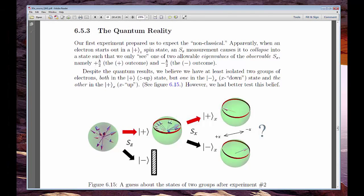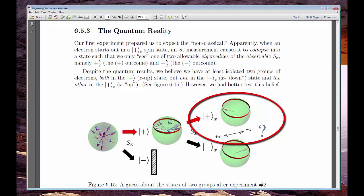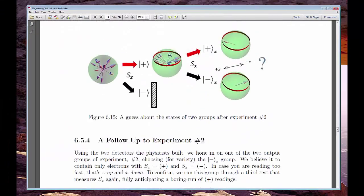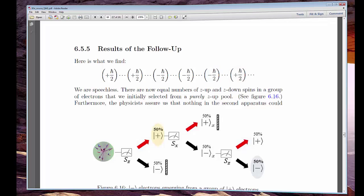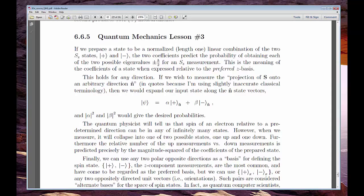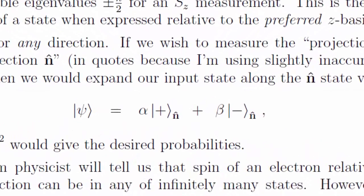Well, we do a few follow-ups, throwing away the down electrons and subjecting the up electrons to even further testing. And every time we do this, we get stranger and stranger results. One by one, we're forced to throw away our initial classical assumptions until finally, we have to toss the old model out the window and adopt a strange new mathematics to accurately predict the results of these experiments.